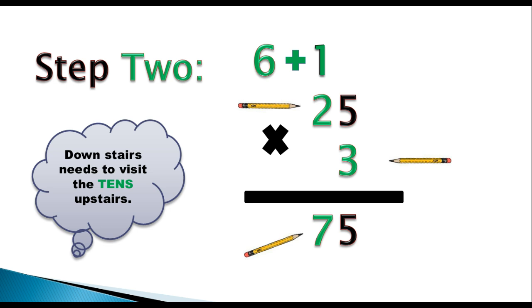Again, ladies and gentlemen, make sure, a nice little tip, make sure that downstairs number, in this case it was the 3, he needs to visit everybody upstairs in order. So, 1's place, and then the 10's place. Ladies and gentlemen, good job today. Thank you very much.